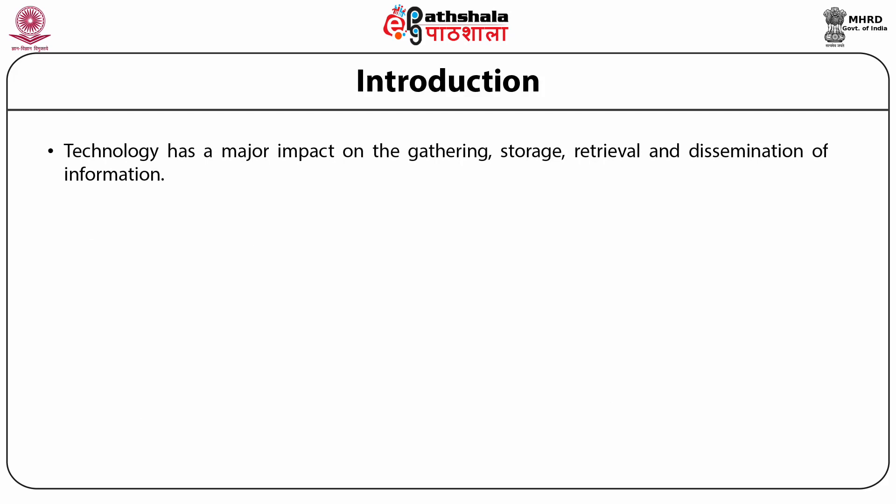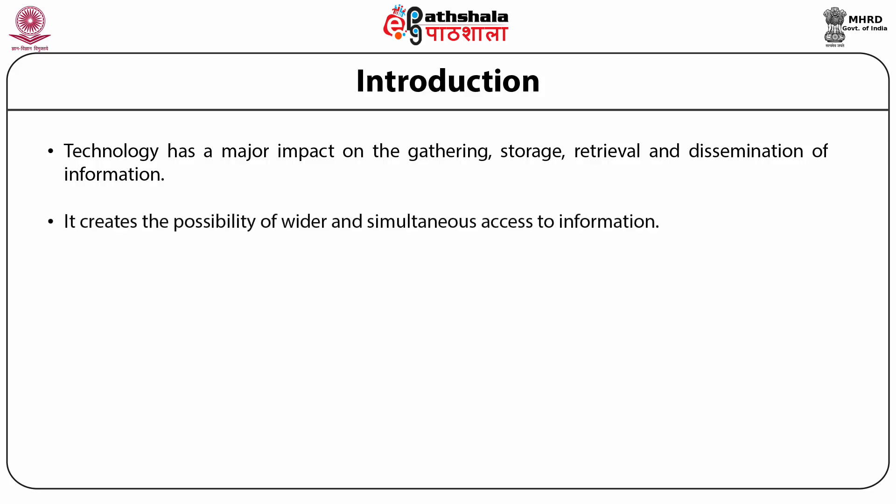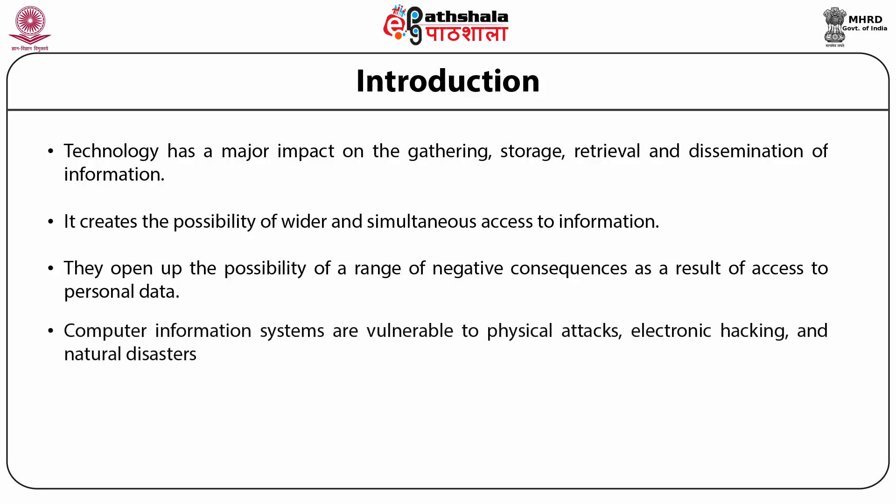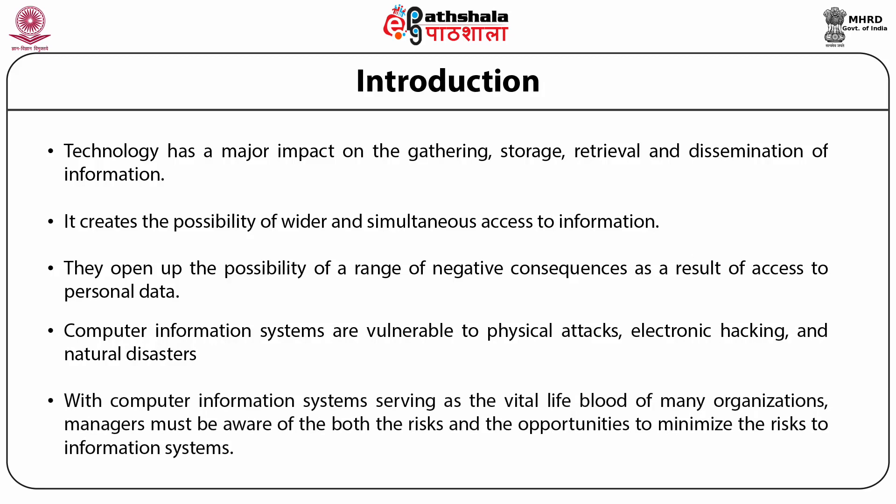Technology has a major impact on the gathering, storage, retrieval, and dissemination of information. Its main ethical impact relates to accessibility or inaccessibility and the manipulation of information, creating the possibility of wider and simultaneous access. Recent advances in information technology threaten privacy and have reduced the amount of control over personal data, opening up a range of negative consequences as a result of access to personal data. Computer information systems are vulnerable to physical attacks, electronic hacking, and natural disasters; managers must be aware of both the risks and opportunities to minimize risk to information systems.